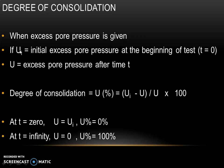When excess pore pressure is given, degree of consolidation is found using ui, which is the initial excess pore pressure at the beginning of the test at t equal to 0, and u, which is the excess pore pressure after time t. So U in percentage equals (ui minus u) divided by ui into 100. At time t equal to 0, U equals 0%. At time t equal to infinity, u equals 0 and degree of consolidation equals 100%.